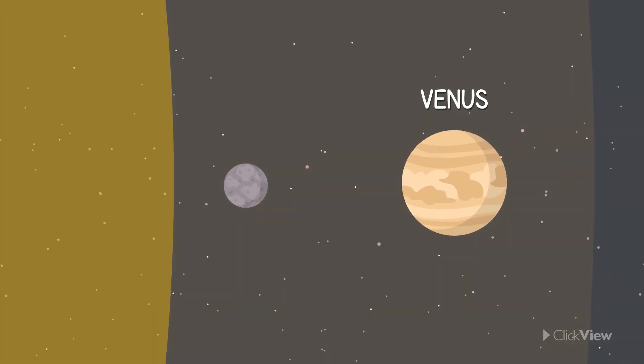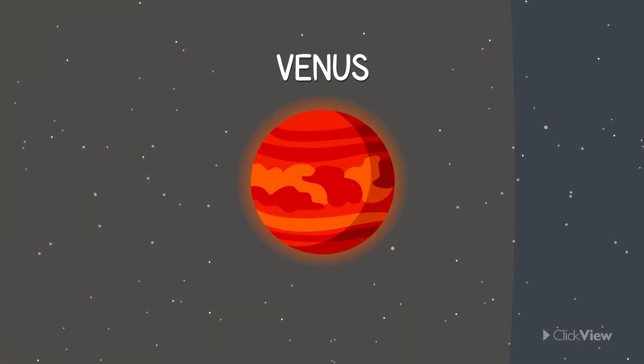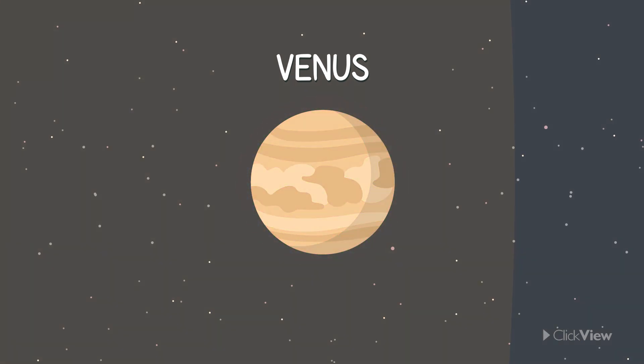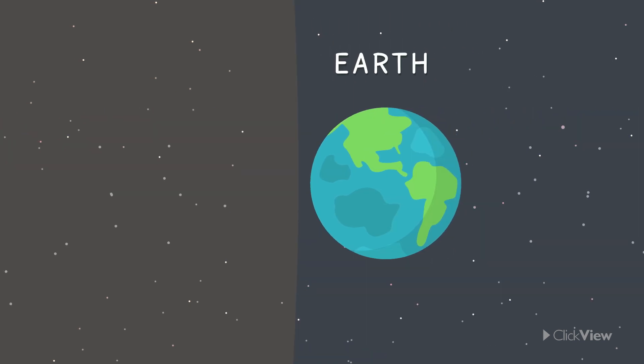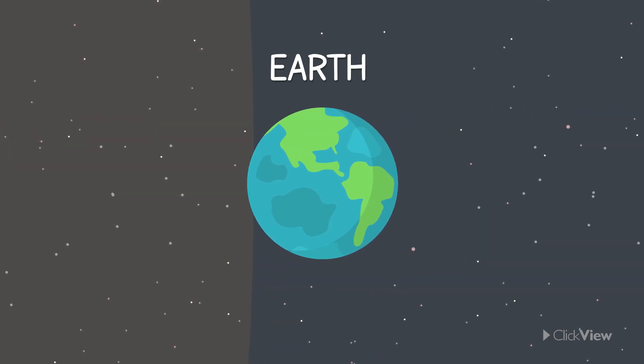Earth is the third planet from the Sun and we all live on it. Earth is often called the blue planet because of the water present on it. It is the only planet known to have life on it, as you can see animals, plants, and human beings here.